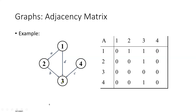Now we are at node 3. From 3 to 1 there is no edge, so it's 0. From 3 to 2 there is no edge, so it's 0. From 3 to 3 there is no loop, so it's 0. From 3 to 4 there is no edge — no direction from 3 to 4 — so it's 0. The third row is [0, 0, 0, 0]. Then for the fourth row: from 4 to 1 there is no edge (0), from 4 to 2 there is no edge (0), from 4 to 3 we have one edge so it's 1, and from 4 to 4 there is no loop so it's 0.